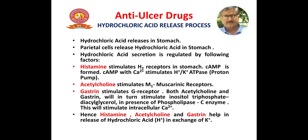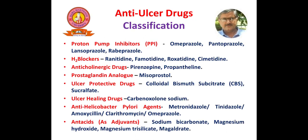So all these three — histamine, acetylcholine, and gastrin — help to release the hydrochloric acid in exchange of potassium in the stomach. Now let us have a look at the anti-ulcer drugs classification.